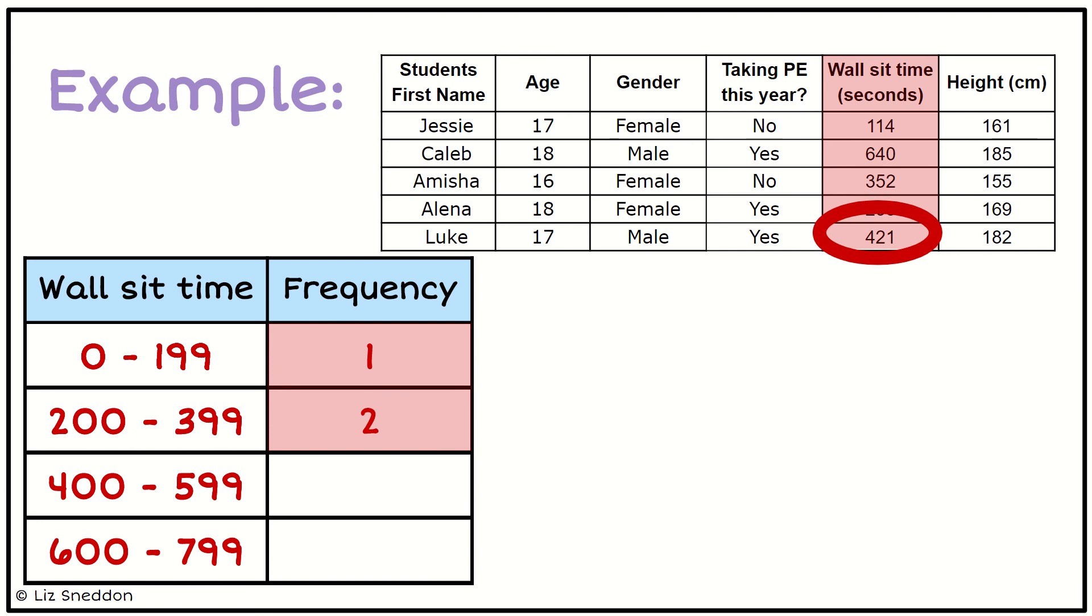Then we've got a value of 421 belonging into our next category, giving us a frequency of 1. And our last value is 640, which gives us a frequency of 1 in the 600 to 799 category.